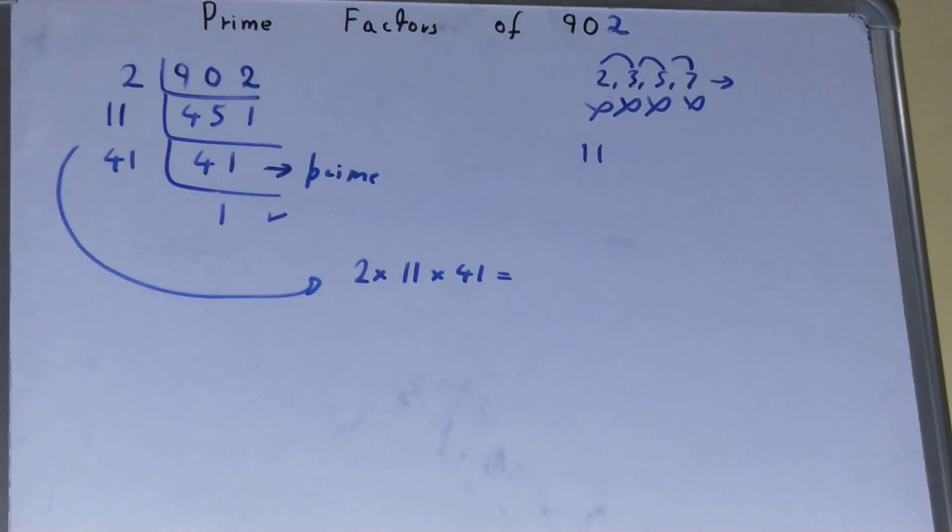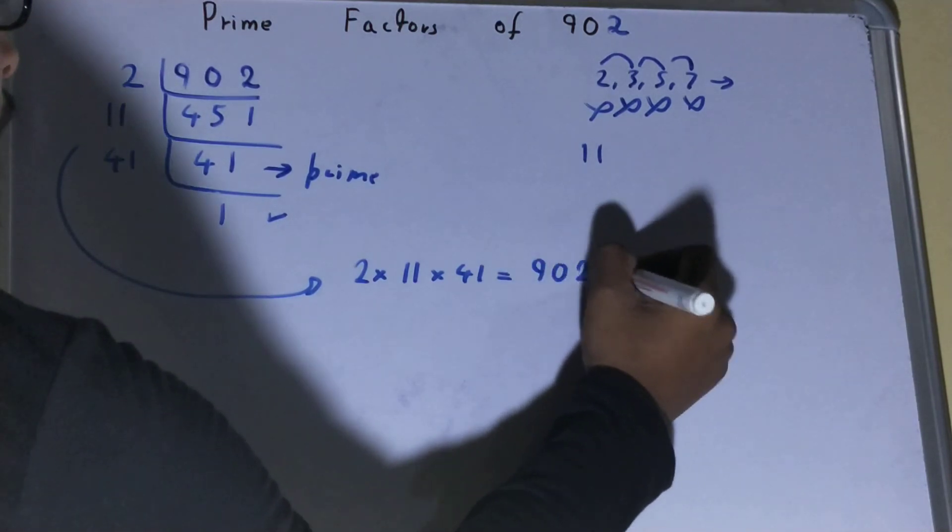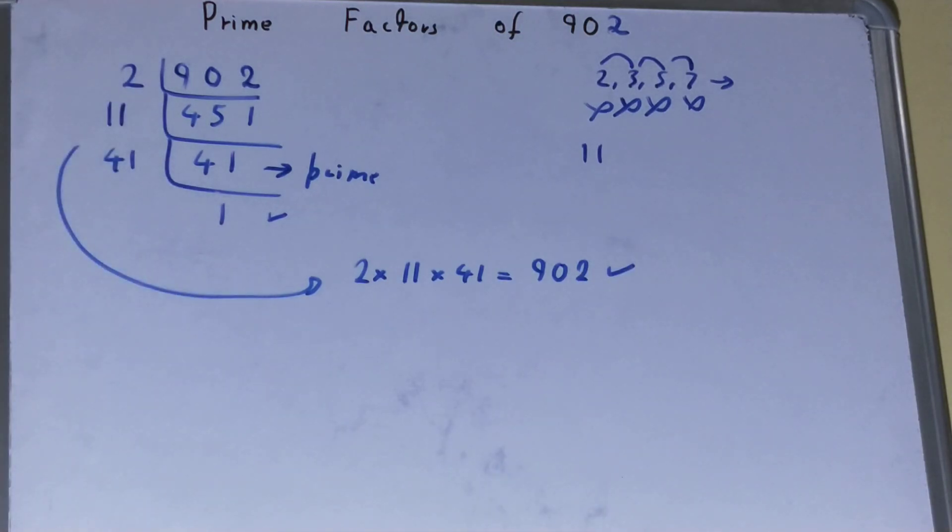If you want to check whether it is right or not, you can multiply it, and if by multiplying you get the number back again, that means your calculation is fully correct. If not, you need to recheck.